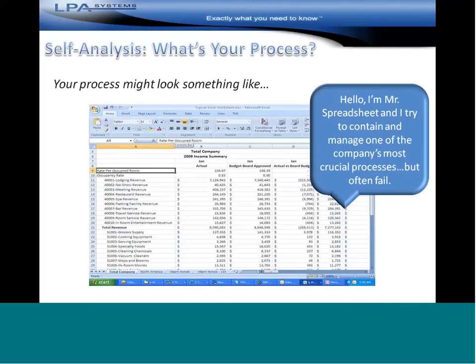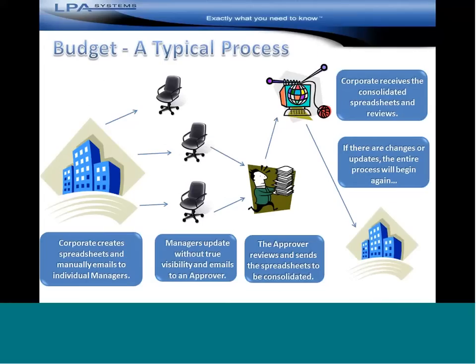Let's talk about budgeting, forecasting, and a quick overview of what most companies do. Corporate creates spreadsheets and then manually emails them out to the individual line of business managers. Managers update those spreadsheets without true visibility and email them to an approver. The approver then reviews and sends these spreadsheets to be consolidated — keep in mind, all this is happening through email. Corporate receives those consolidated spreadsheets and reviews them. If there are changes or updates, the entire process begins again. And not all the time, if a topside adjustment happens at the CFO level, do those things get pushed all the way back down to the cost center managers — and automatically, right out of the gate, the numbers do not tick or tie.